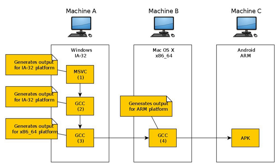Embedded computers where a device has extremely limited resources. For example, a microwave oven will have an extremely small computer to read its touchpad and door sensor, provide output to a digital display and speaker, and to control the machinery for cooking food. This computer will not be powerful enough to run a compiler, a file system, or a development environment. Since debugging and testing may also require more resources than are available on an embedded system, cross-compilation can be less involved and less prone to errors than native compilation.